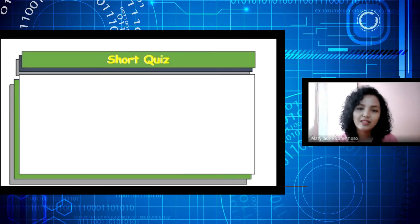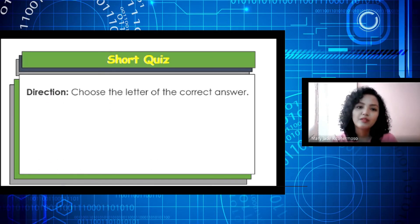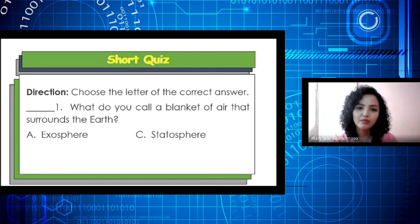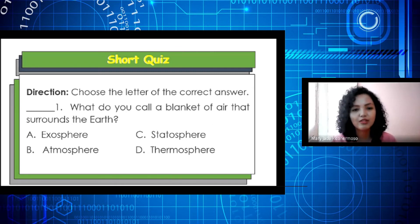Next, let's have a short quiz to test if we really understand our lesson for today. The first question is: what do you call a blanket of air that surrounds the Earth? A. Exosphere, B. Atmosphere, C. Stratosphere, and letter D. Thermosphere. The correct answer is letter B. Atmosphere. Good job!